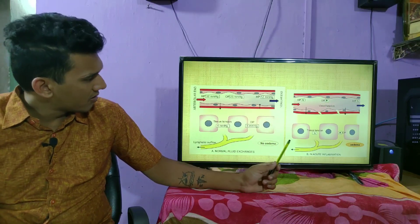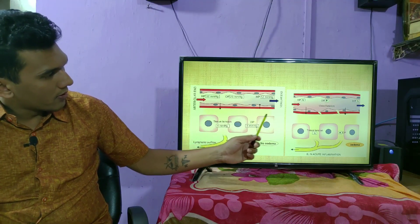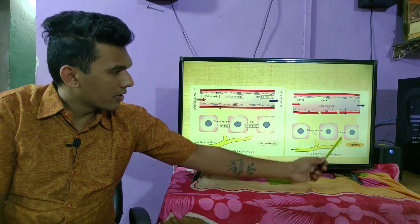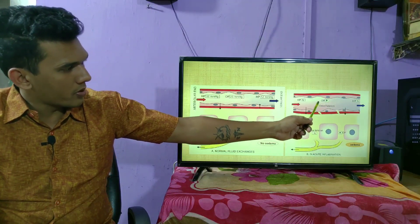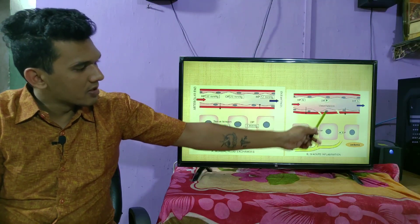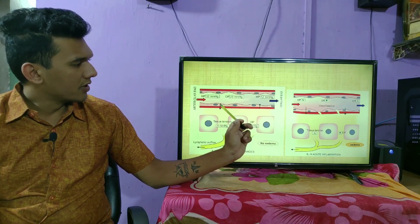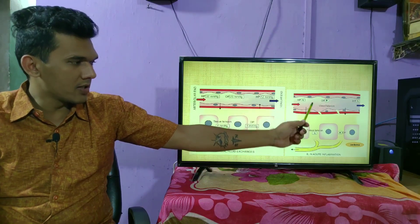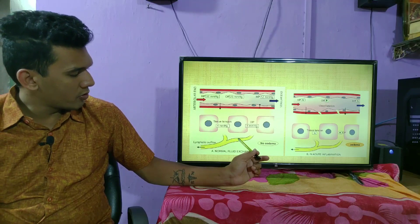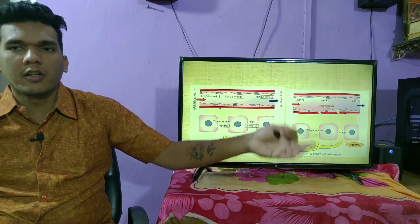Looking at the picture: in a normal scenario, hydrostatic pressure is normal and there is no vasodilatation or edema. In acute inflammation, there is increasing oncotic pressure due to vasodilatation — increased flow causes fluid to come out of the extracellular spaces, producing edema or swelling. In the inflamed scenario the vessel is dilated, causing transudation, whereas in the normal scenario no transudation or edema occurs.